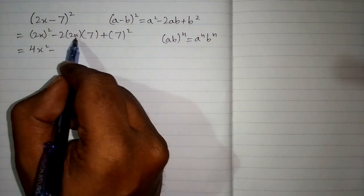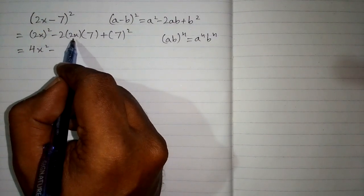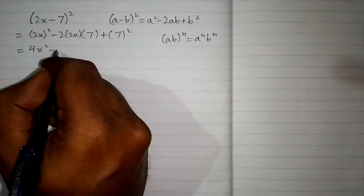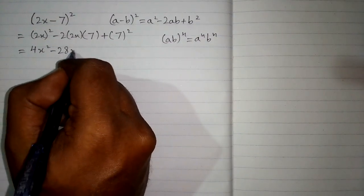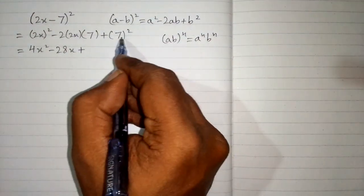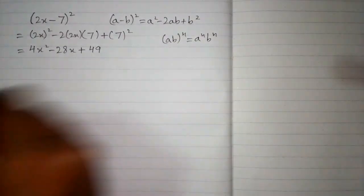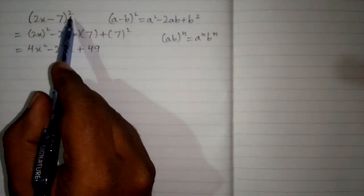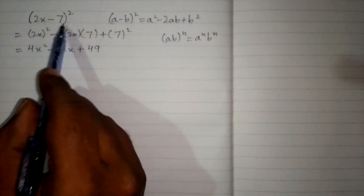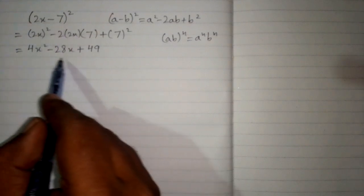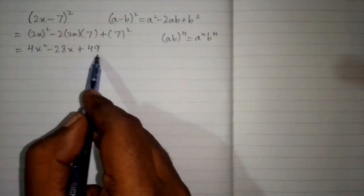Then minus 2 times 2x is 4x and 4 times 7 is 28. So we have 28x and then plus square of 7 which is 49. So square of 2x minus 7 is 4x square minus 28x plus 49.